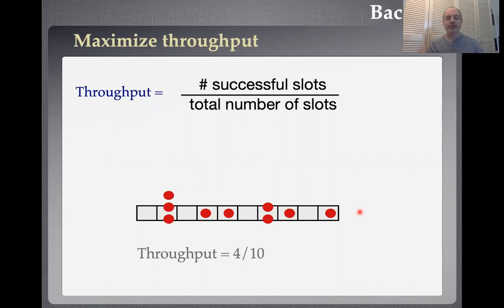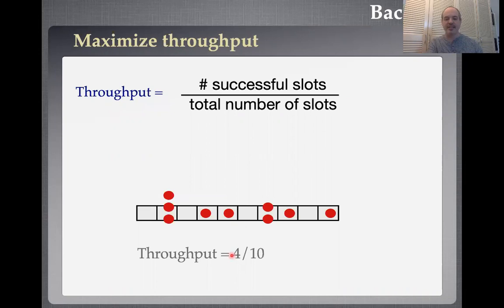For now, let's think about throughput as our goal. We have some total number of slots used in our protocol, and some number of successful slots — the packets that successfully broadcast. We want to maximize our throughput: the number of successful slots divided by the total number of slots. In this example, our throughput is four tenths — we're using 10 slots and there are four successes. There are many other metrics you might care about, but this is a nice simple one to start with.